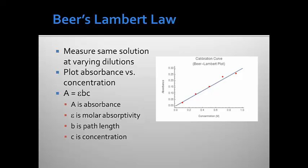All of these phenomena are brought together in what's called the Beer's-Lambert law. So if we were to measure the same solution at various dilutions and plot the absorbance that we measured versus concentration, we would get a straight line. That straight line corresponds to this equation, A equals epsilon BC, where A is the absorbance, epsilon is the molar absorptivity, B is the path length, and C is the concentration.